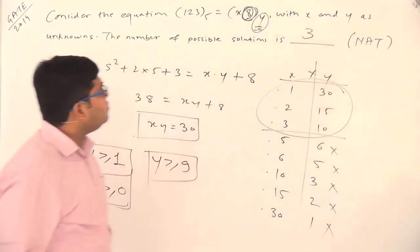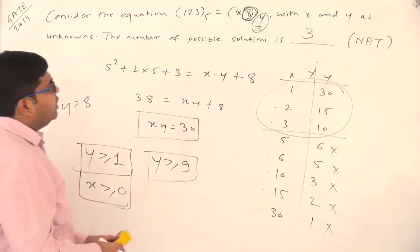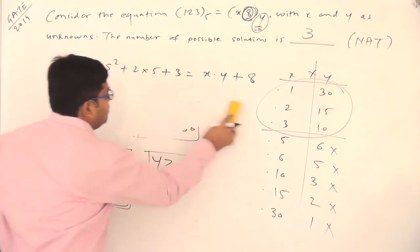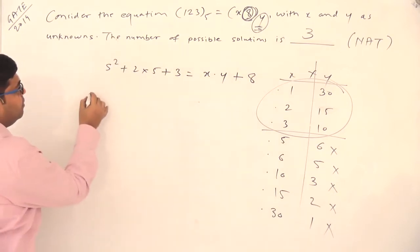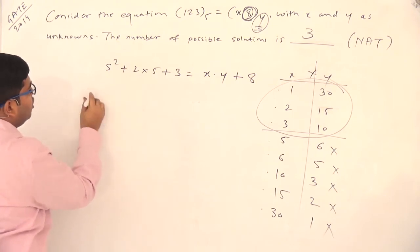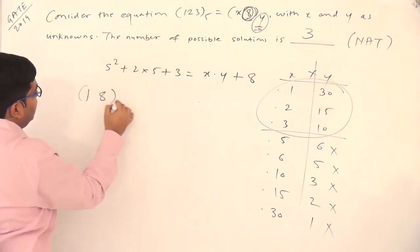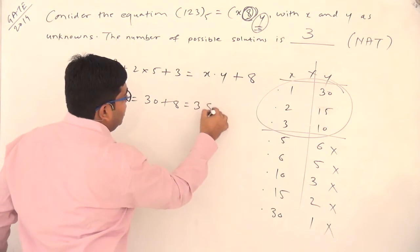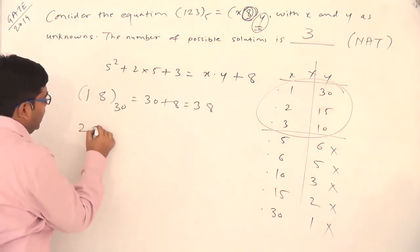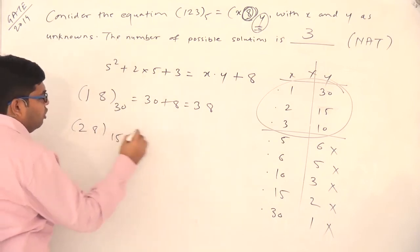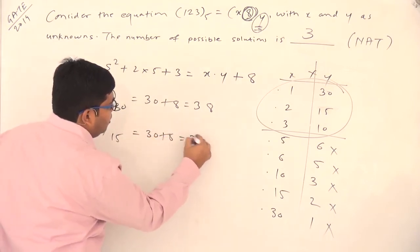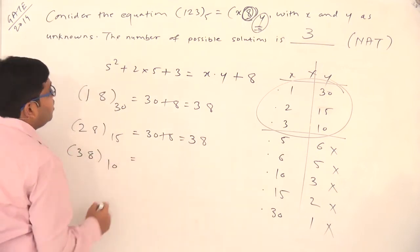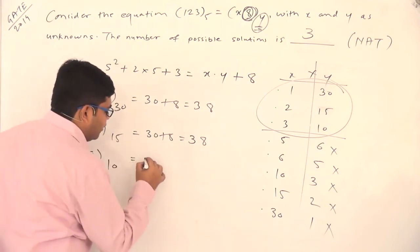We verify: if the base is 30, the number is 18 in base 30, which equals 30×1 plus 8 = 38. Second, 28 in base 15 equals 15×2 plus 8 = 38. And lastly, 38 in base 10 is simply 38. All three satisfy the original equation.